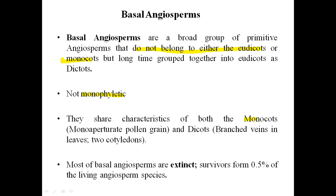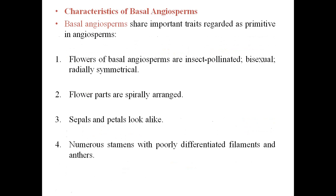Basal angiosperms are not monophyletic and they share some characters with monocots and some with dicots. One character shared with monocots is the pollen grain structure — the pollen grain has a single opening, making it monoaperturate. Characters shared with dicots include branched veins in leaves and two cotyledons. Most basal angiosperms are extinct today; just 0.5 percent of species are living today.